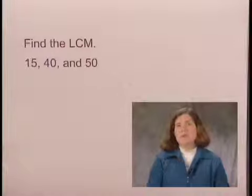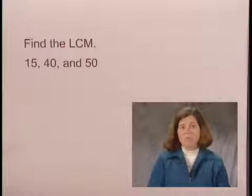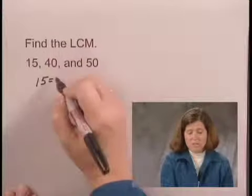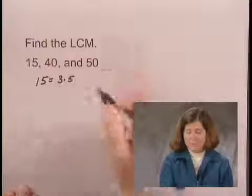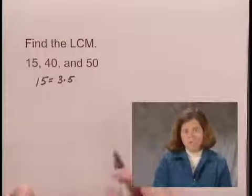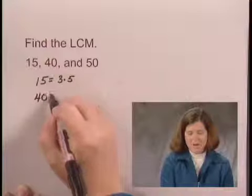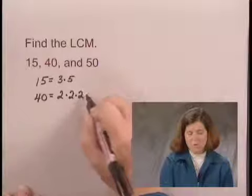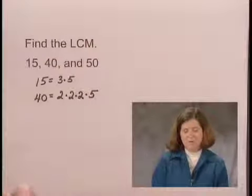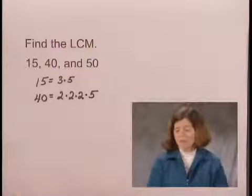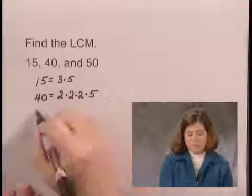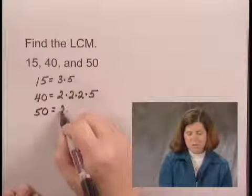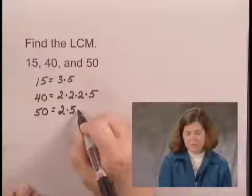We'll use the prime factorizations of each number to find the least common multiple of these three numbers. The prime factorization of 15 is 3 times 5. The prime factorization of 40: 40 is 8 times 5, and 8 is 2 times 2 times 2, so the prime factorization of 40 is 2 times 2 times 2 times 5. Since 50 is 2 times 25, its prime factorization is 2 times 5 times 5.